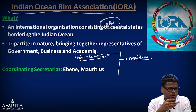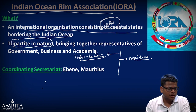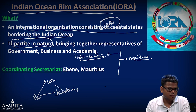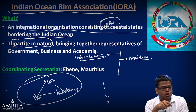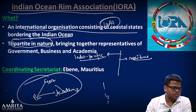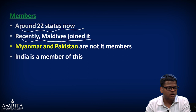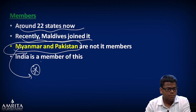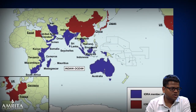IORA is an international organization of coastal states bordering the Indian Ocean. It is tripartite in nature — not only governments but also business and academia — so it is not purely intergovernmental. The secretariat is in Mauritius. It has around 22 members. Recently Maldives joined. Importantly, Myanmar and Pakistan are not members despite sharing Indian Ocean borders. India is obviously a member.